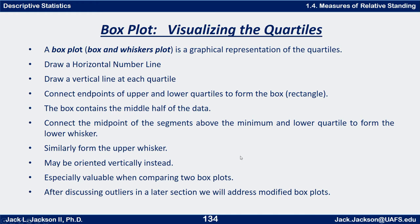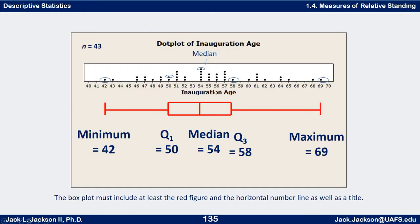If you remember from a previous video, we've been looking at the inauguration ages of United States Presidents from Washington to Obama — specifically their age at their first inauguration. We already computed the five number summary: minimum is 42, Q1 is 50, the median is 54, Q3 is 58, and the maximum is 69. If you don't remember how we did that, go back to the last video.